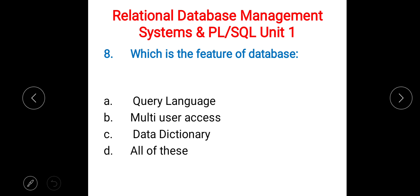If you have any query about the answers, you can comment — if there is any confusion, I can correct it in the next session. Next question: which is a feature of a database? A) query language, B) multi-user access, C) data dictionary, D) all of these. The correct answer is D) all of these.